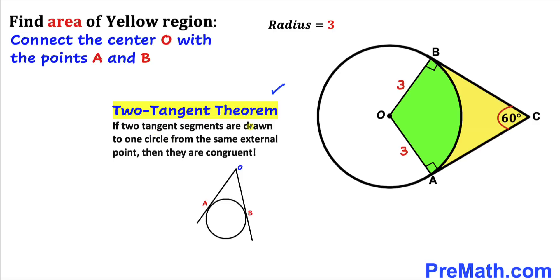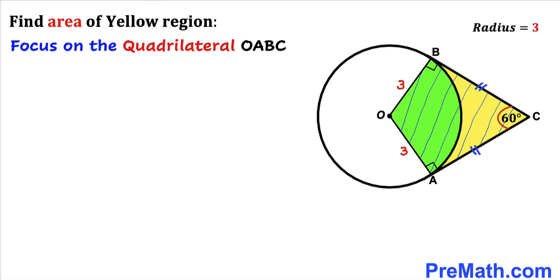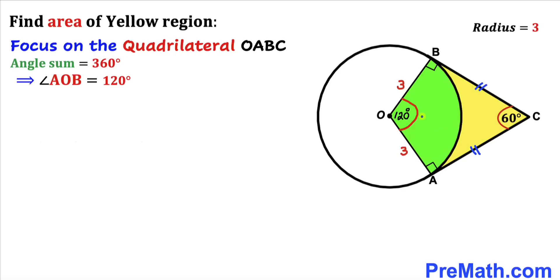According to the two tangent theorem, if two tangent segments are drawn to one circle from the same external point, they are congruent. Therefore, line segment AC is congruent to BC. Now focusing on quadrilateral OABC, the sum of all its angles equals 360 degrees. We know angle A is 90°, angle B is 90°, and angle ACB is 60°, so the remaining angle AOB must be 120 degrees.